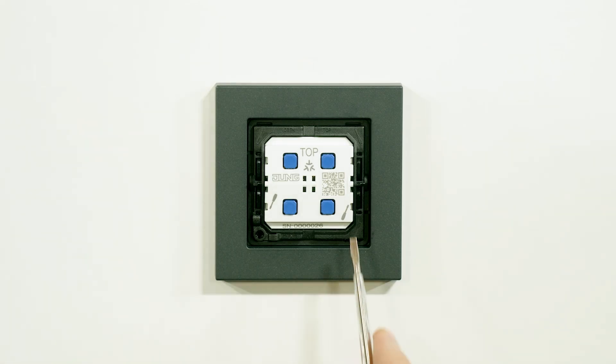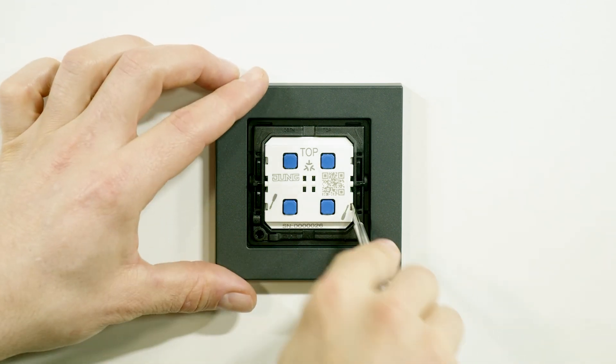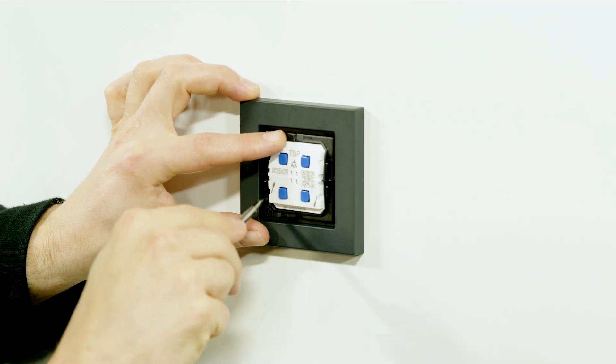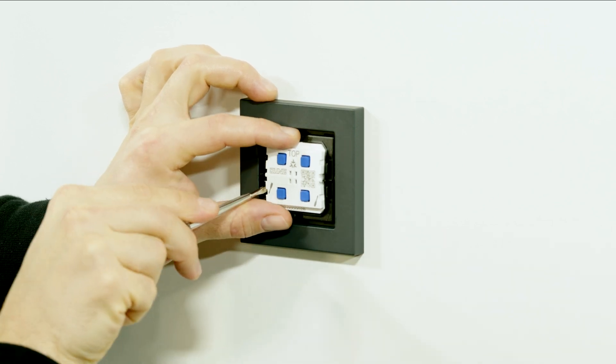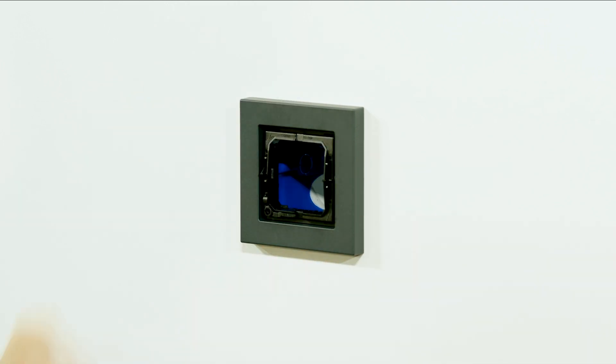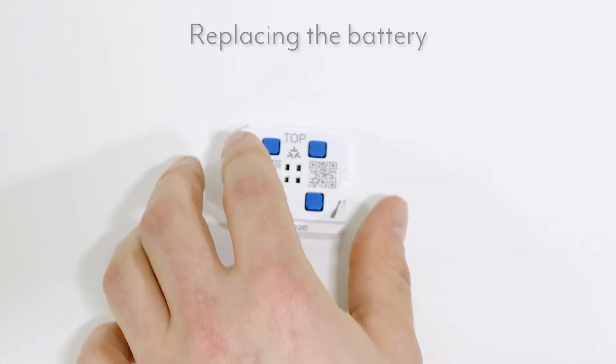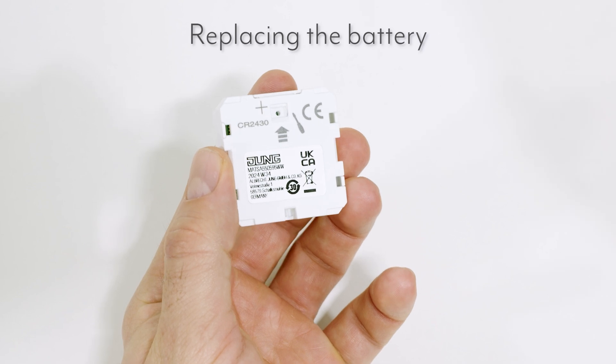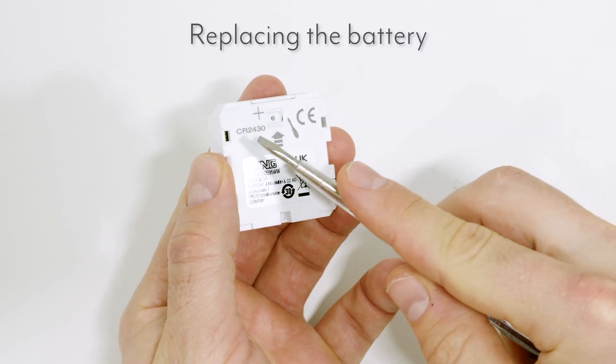Then carefully lever the radio module from the mounting ring. To do this, use a flat blade screwdriver with a blade width of 3 mm or less to reach into the two outlets on the module and remove it from the mounting adapter. The META push button has a CR2430 lithium button cell battery.